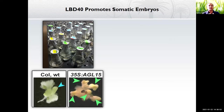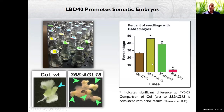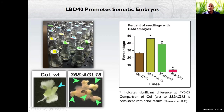The next question: does LBD40 have a role in somatic embryos? We used a well-established system called SAMSE — shoot apical meristem somatic embryos. Mature seeds germinate in liquid media with synthetic auxin 2,4-D; after 21 days, seedlings show embryo-like structures. Columbia control showed 25% SAMSE; overexpression of AGL15 showed over 50%; overexpression of LBD40 showed 40%. Interestingly, when LBD40 is mutated together with its close relative LBD41, there is significant reduction of somatic embryos.